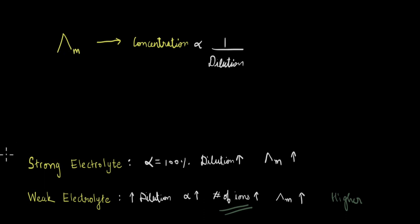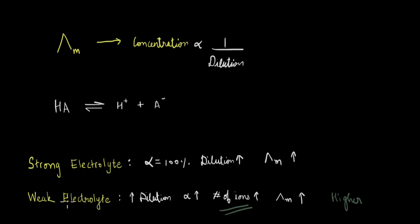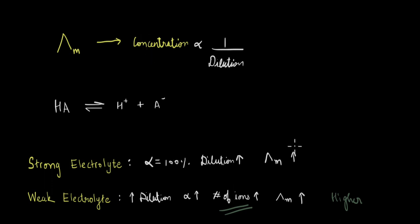An electrolyte can be a strong electrolyte or a weak electrolyte depending on how they dissociate. If you have some electrolyte HA dissociating into H⁺ and A⁻, if this is a weak electrolyte, the extent of dissociation will be very less, and if it's a strong electrolyte, this dissociation will be 100%. In the case of a strong electrolyte, when you increase the dilution or decrease the concentration, the molar conductivity increases.